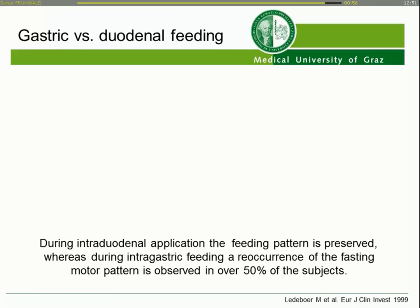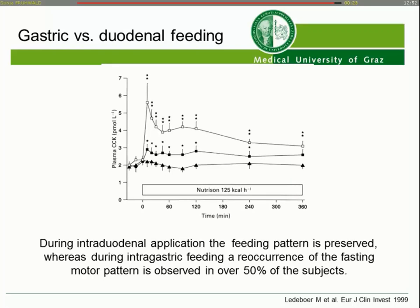Is there a difference between gastric and duodenal feeding? When patients were fed via the gastric route, 50% had a relapse to the micro-MMC — the fasting pattern — whereas there was no such relapse in the group receiving post-pyloric enteral nutrition. The reason is a significantly higher liberation of CCK in the duodenally fed group, which has a more inhibitory effect on the fasting pattern.